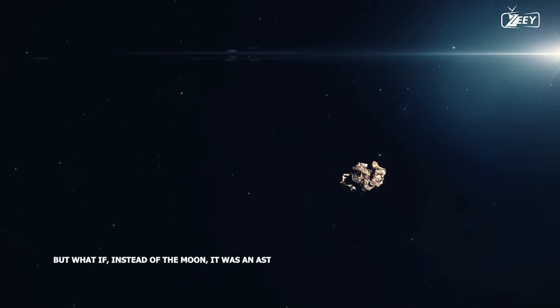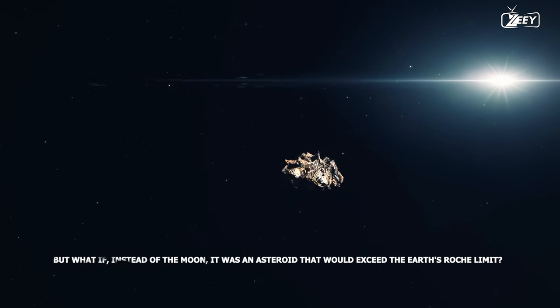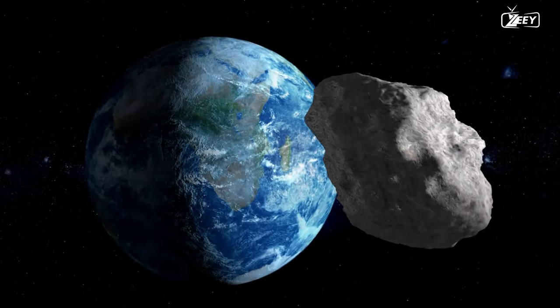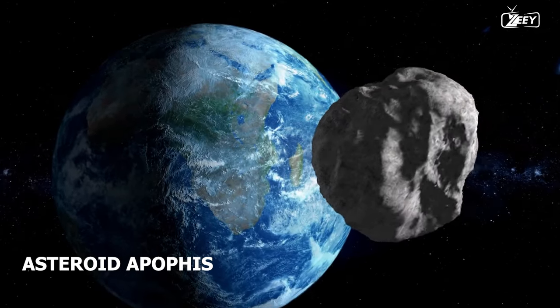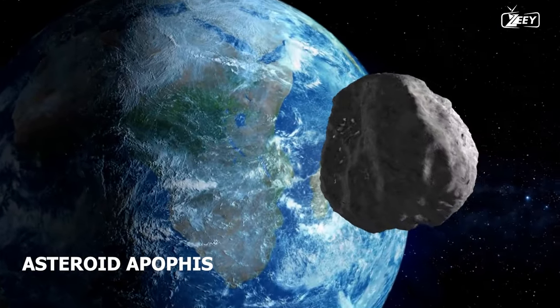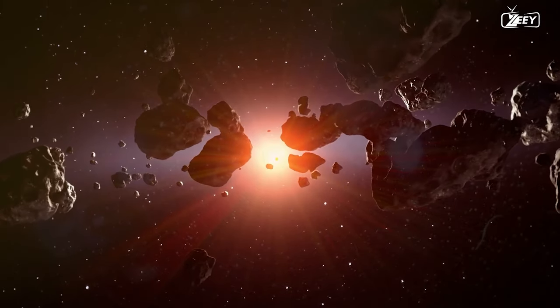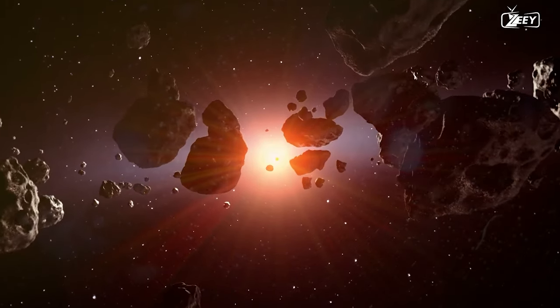But what if, instead of the moon, it was an asteroid that would exceed the Earth's Roche limit? Suppose a massive asteroid, such as Apophis, comes so close to the Earth that it exceeds the Roche limit and is destroyed by the planet's gravity, transforming it into a ring of asteroids. What impact would something like this have on the planet?